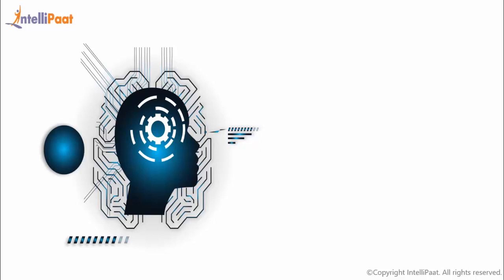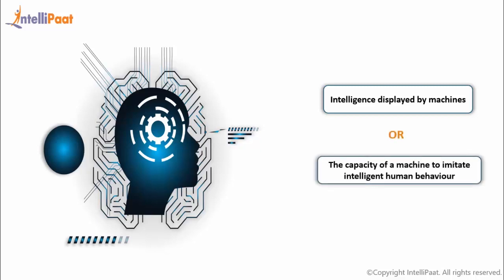The simplest definition of artificial intelligence can be described as the intelligence displayed by machines, or in other words, the capacity of a machine to imitate intelligent human behavior. That means AI is defined as the ability of a computer program or machine to think, learn, and make decisions just like us.